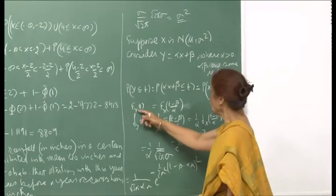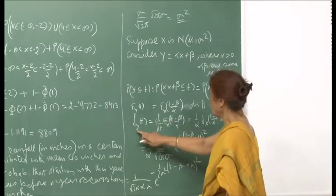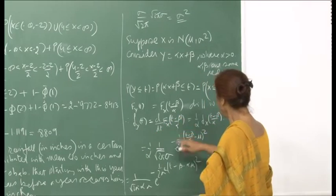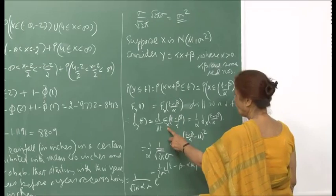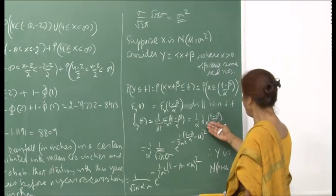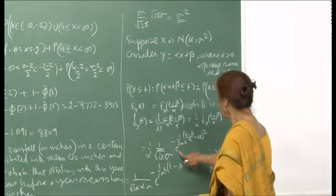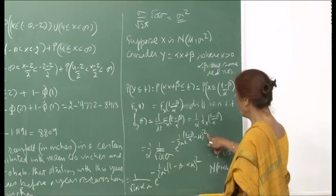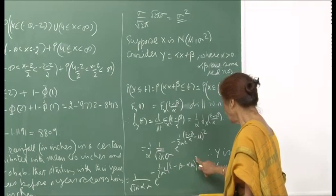So this is your CDF of y, which is equal to the CDF of x but with parameter t replaced by (t − β)/α. Now if you differentiate both sides with respect to t, this will become the PDF, and this is d/dt of F_x((t − β)/α), which will be (1/α) f_x((t − β)/α). The derivative of capital F_x will be the PDF of the random variable x.